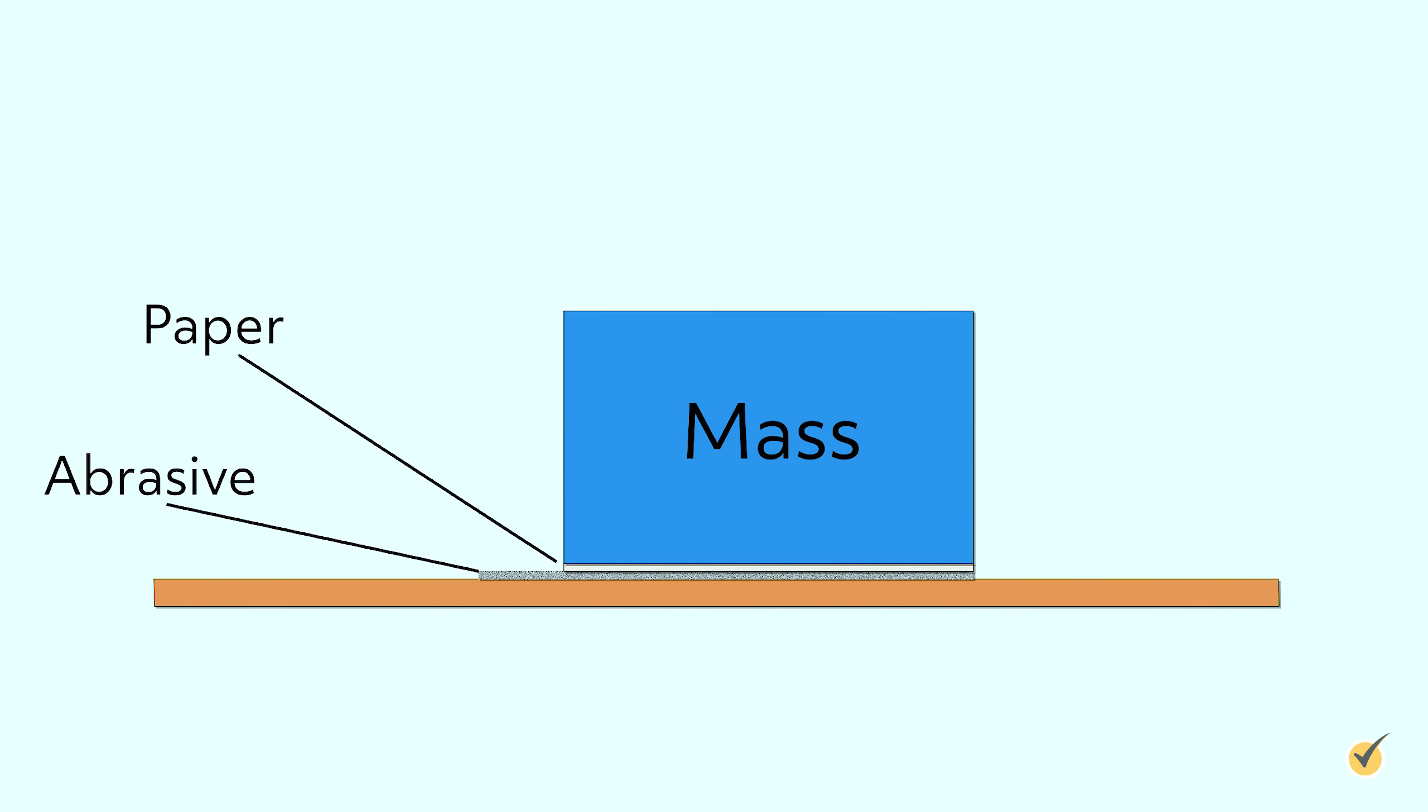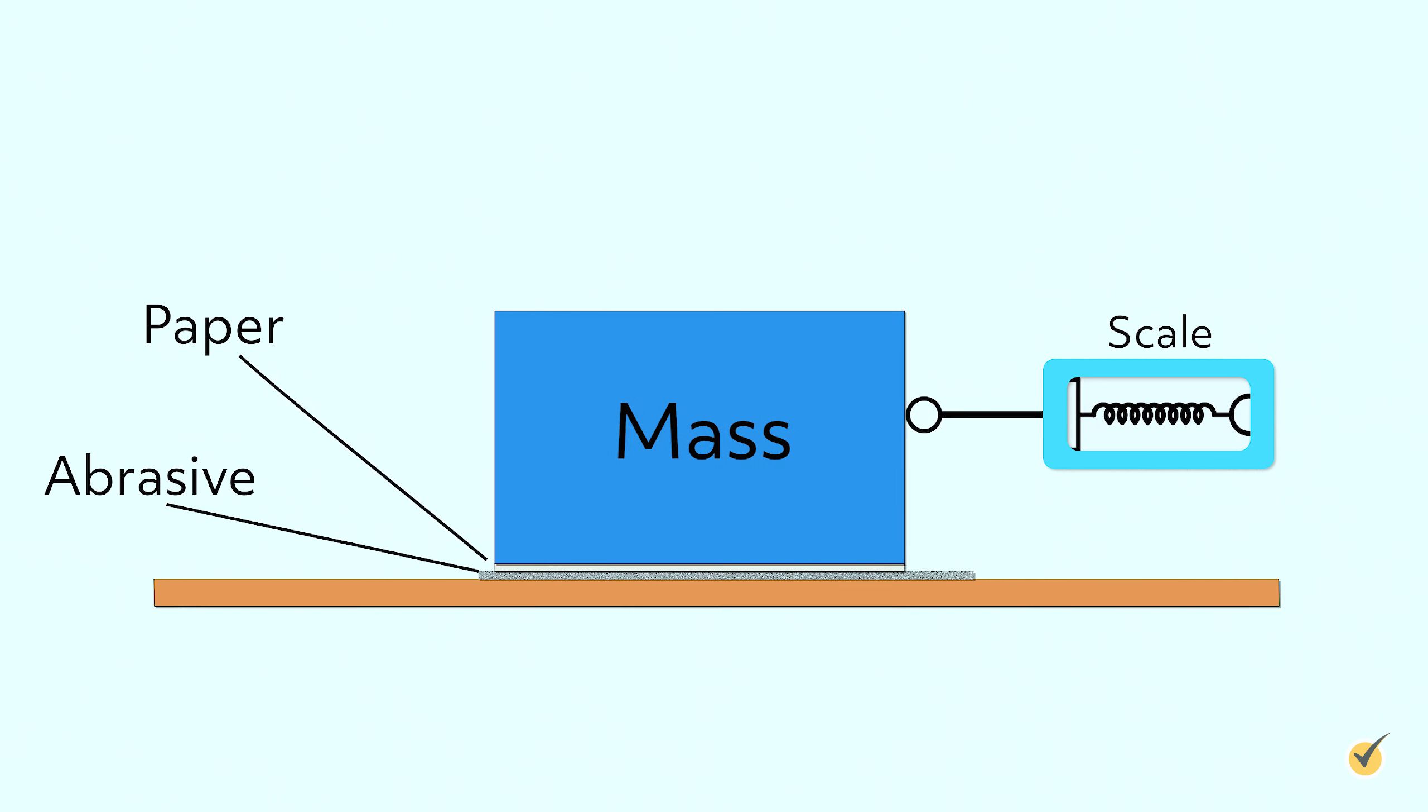Using the same amount of paper and a block of a given mass for each, attach a spring scale to the block and pull until the block starts to move. The maximum read from the scale is correlated with static friction. Then you can pull the block at a constant velocity to measure the kinetic friction.